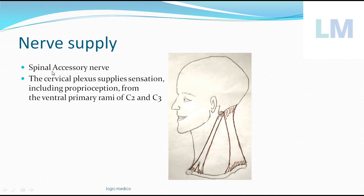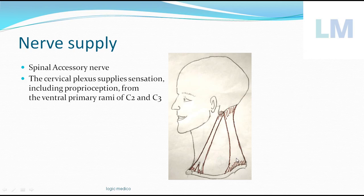To test this muscle, hold the chin of the person and ask them to push against your hand. If they can do so, the sternocleidomastoid is working on that side. For example, if you ask the person to twist to the right, the left sternocleidomastoid becomes prominent. The same spinal accessory nerve also supplies the trapezius muscle, which can be tested by asking the patient to shrug their shoulder against resistance. If they can, the nerve is intact.